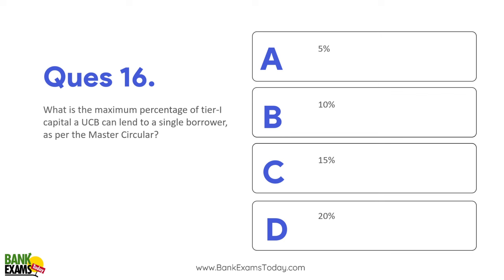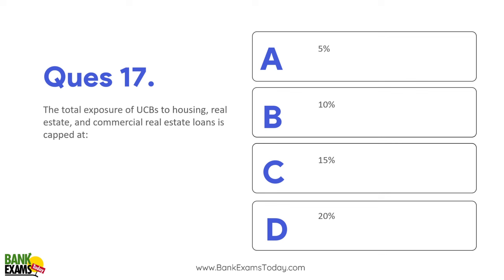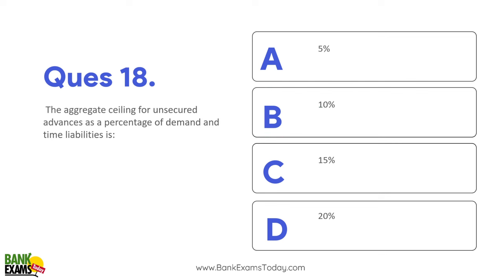What is the maximum percentage of tier 1 capital a UCB can lend to a single borrower? As per the RBI's master circular, UCB ek single borrower ko 15 percent apne tier 1 capital ka lend kar sakta hai. Ek hi borrower ko zaroorat se zyada lend kar dhenge toh woh default kar sakta hai. For a group of companies, the limit is different. Total exposure of UCB to housing, real estate and commercial real estate is capped at 10 percent of tier 1 capital.